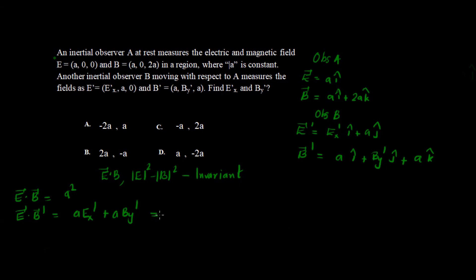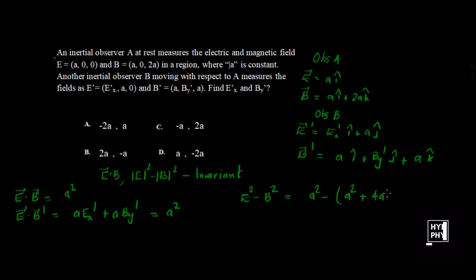For observer B, E prime dot B prime equals a·E_x' plus a·B_y', and this must equal a squared by invariance. Now for the second invariant: E squared minus B squared for observer A equals a squared minus (a squared plus 4a squared), which gives minus 4a squared. So E prime squared minus B prime squared must also equal minus 4a squared.